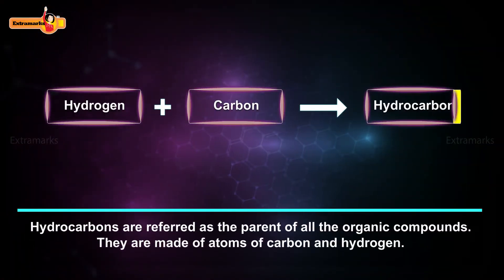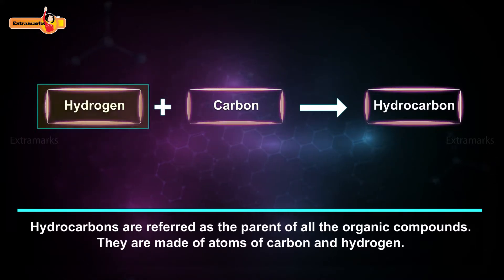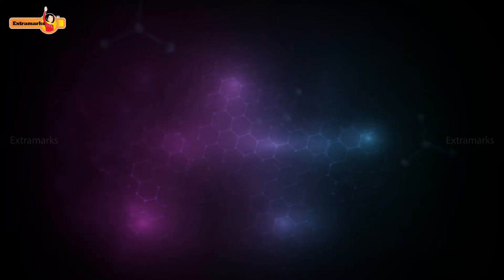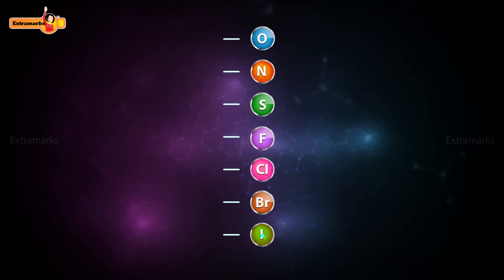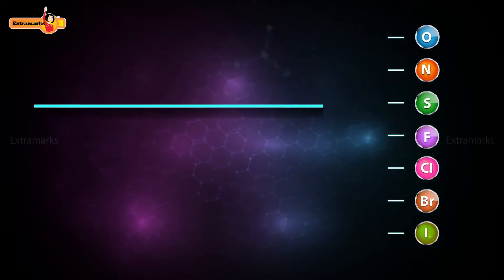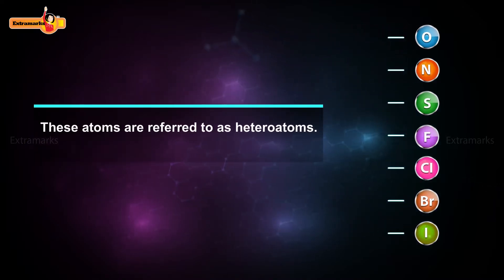Hydrocarbons are referred as the parent of all the organic compounds. They are made of atoms of carbon and hydrogen. Sometimes atoms of oxygen, nitrogen, sulphur, fluorine, chlorine, bromine, iodine, etc. are also present in them. These atoms are known as heteroatoms.